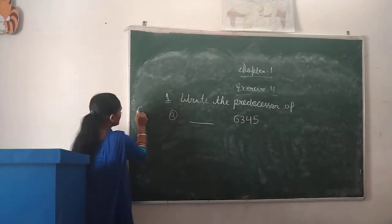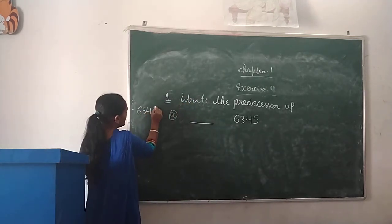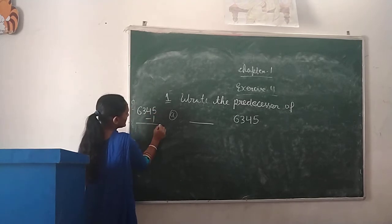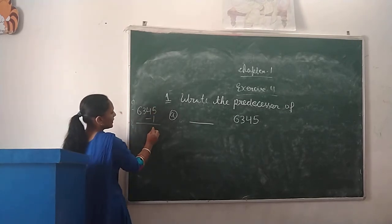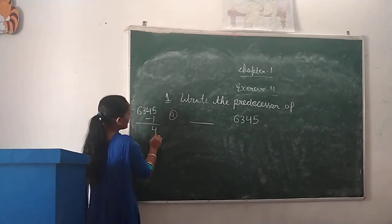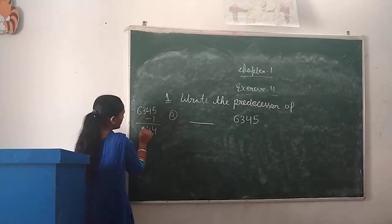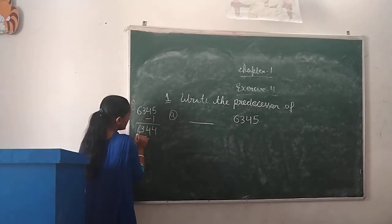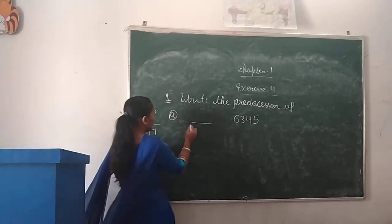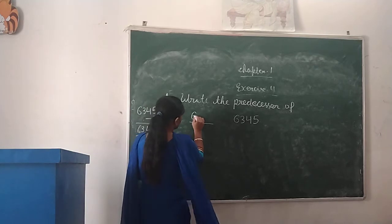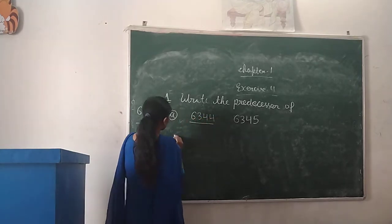We will subtract 1 from this number. 5 minus 1 is 4. 4 minus 0 is 4. 3 stays 3. 6 stays 6. So the predecessor is 6,344.